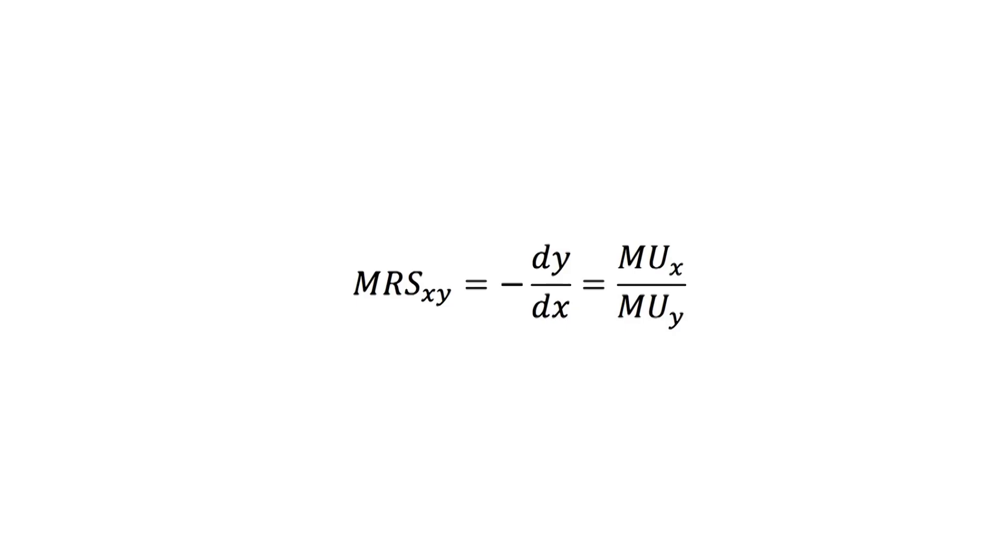As you can see, the formula is the negative relation between the derivative of good y in terms of the derivative of good x. It is negative because the marginal rate of substitution corresponds to the slope of the indifference curve, which has a decreasing slope.